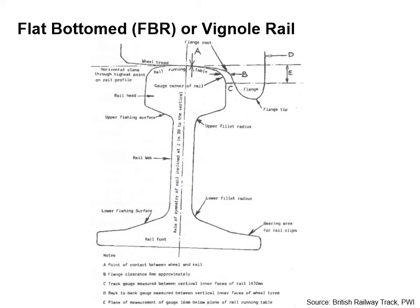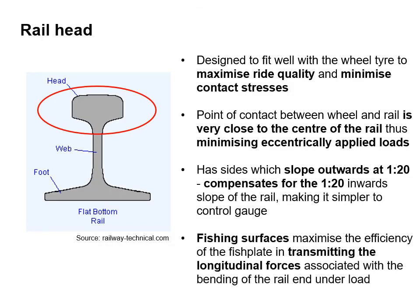A more detailed drawing of the flat bottom rail section shows the rail head, identifying the fishing surfaces and fillet radii, and shows how the flange of the wheel interacts with the rail head. The rail head is designed to fit well with the wheel tyre, maximise ride quality and minimise contact stresses. It's the point of contact between the wheel and the rail, very close to the centre of the rail, thus minimising eccentrically applied loads.